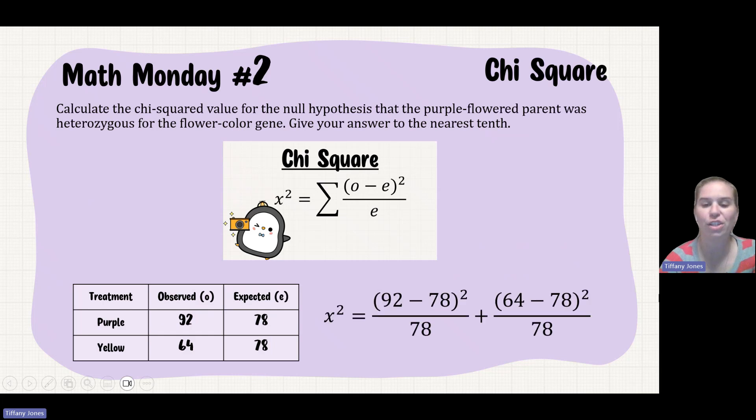So if we substitute it into our equation, we have 92 minus 78 squared divided by 78. So it's my observed minus my expected over my expected. And then I do my observed minus my expected. So 64 minus 78 squared over 78.